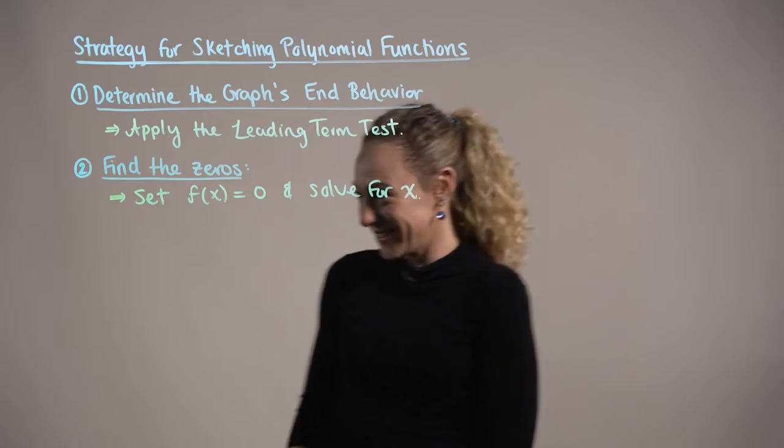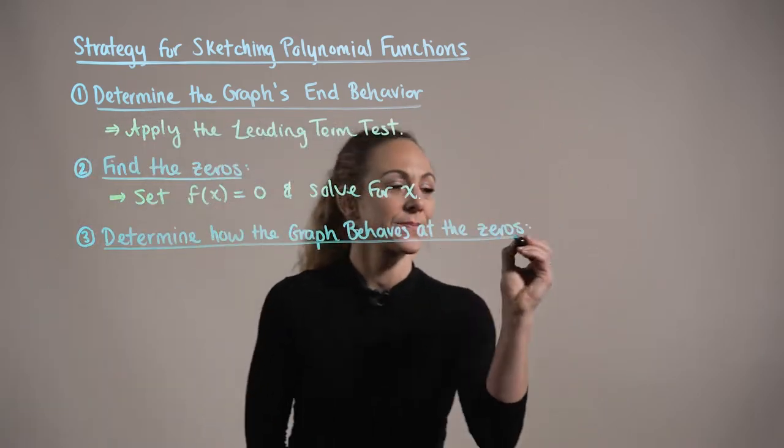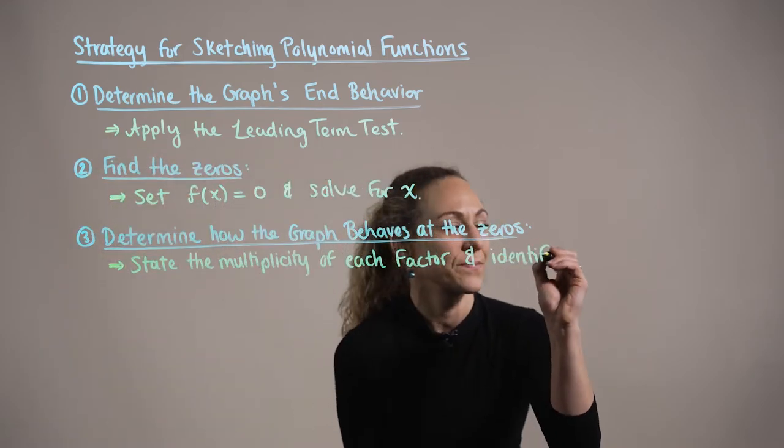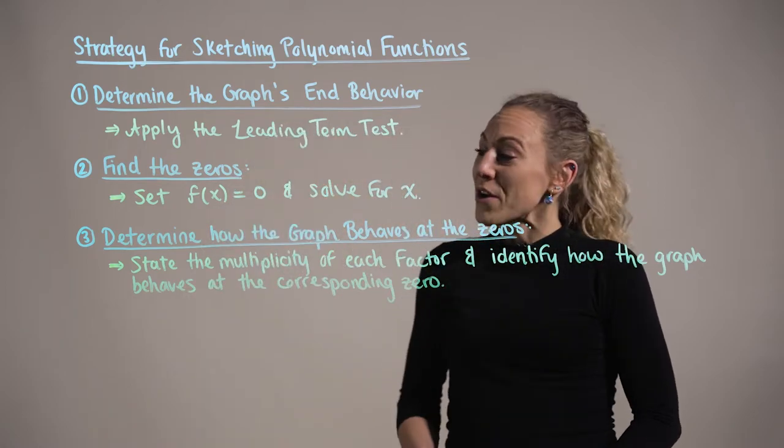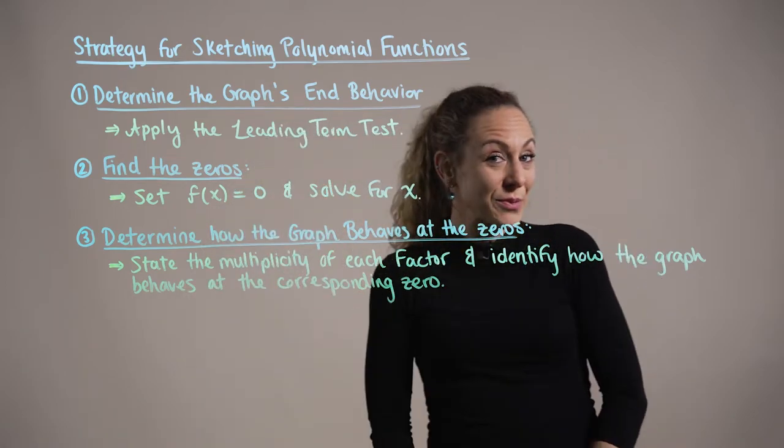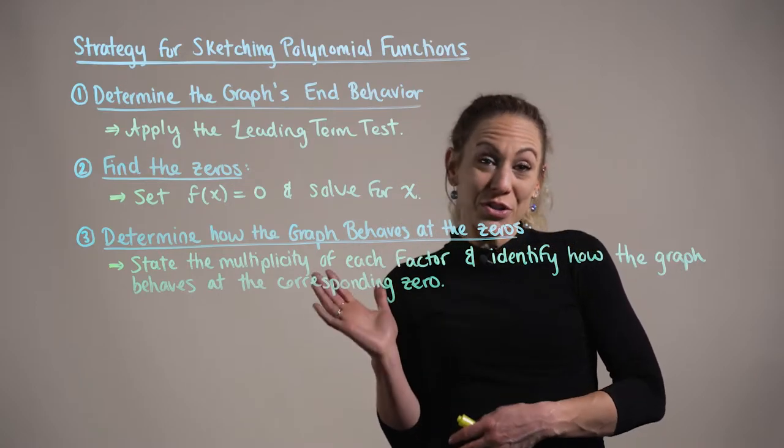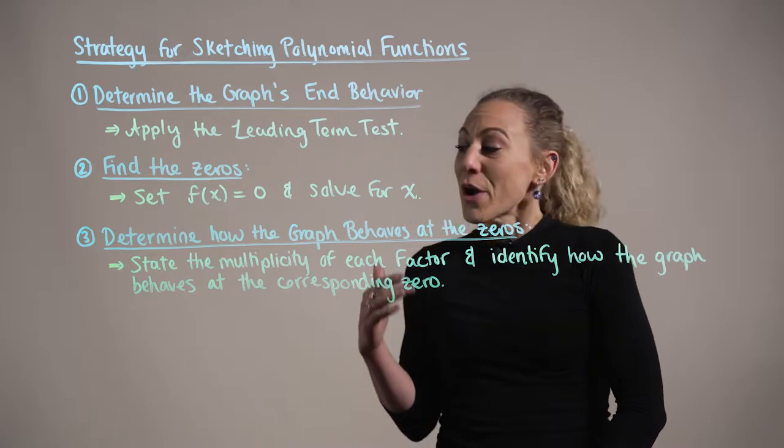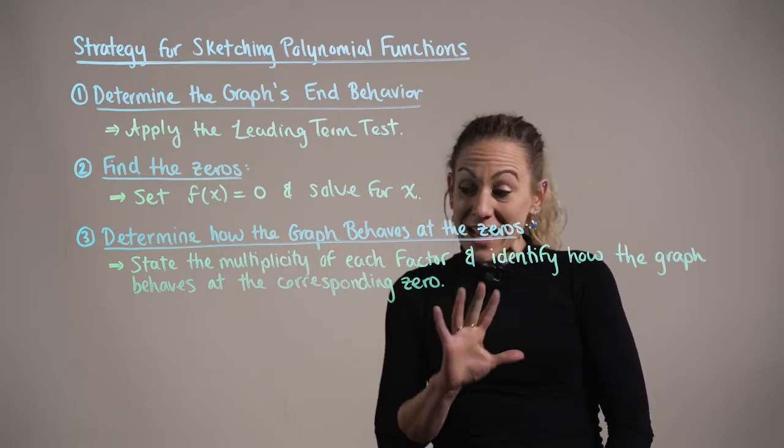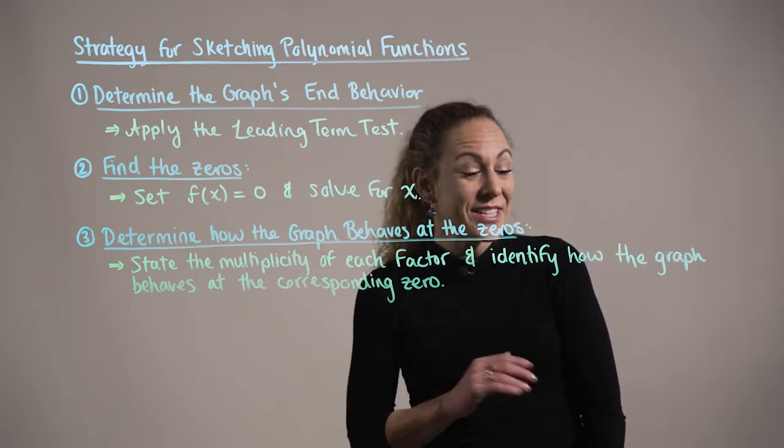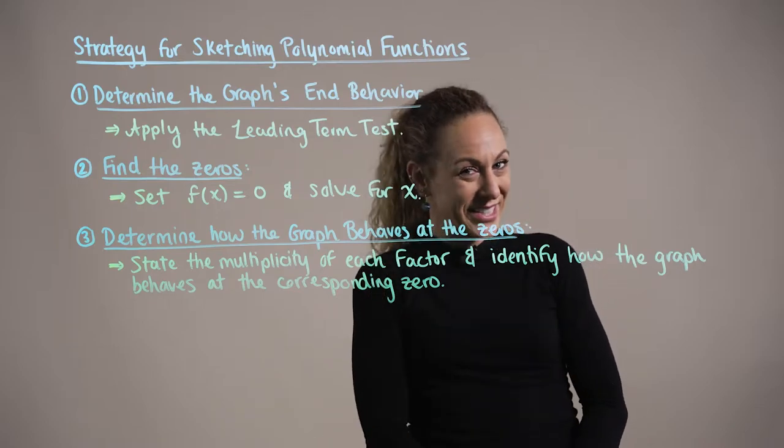Step three. In step three, we want to determine how the graph is going to behave at each of the zeros. In order to determine how the graph behaves at a zero, we first identify the multiplicity of each factor and then use this multiplicity to help us identify how the graph is going to behave at the x-axis for the corresponding zeros.